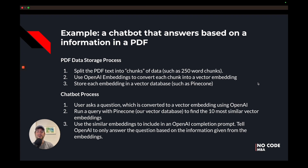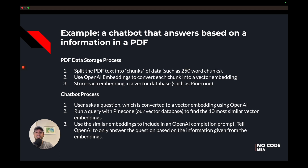Let's walk through a high-level example of how to build a chatbot that answers based on information in a PDF. The process starts by taking that PDF, converting it to text, and then chunking that text into groups of data such as 250-word chunks. We split it up so we can take those chunks and convert each one into a vector embedding, then store those embeddings in a vector database — each chunk representing a group of text.